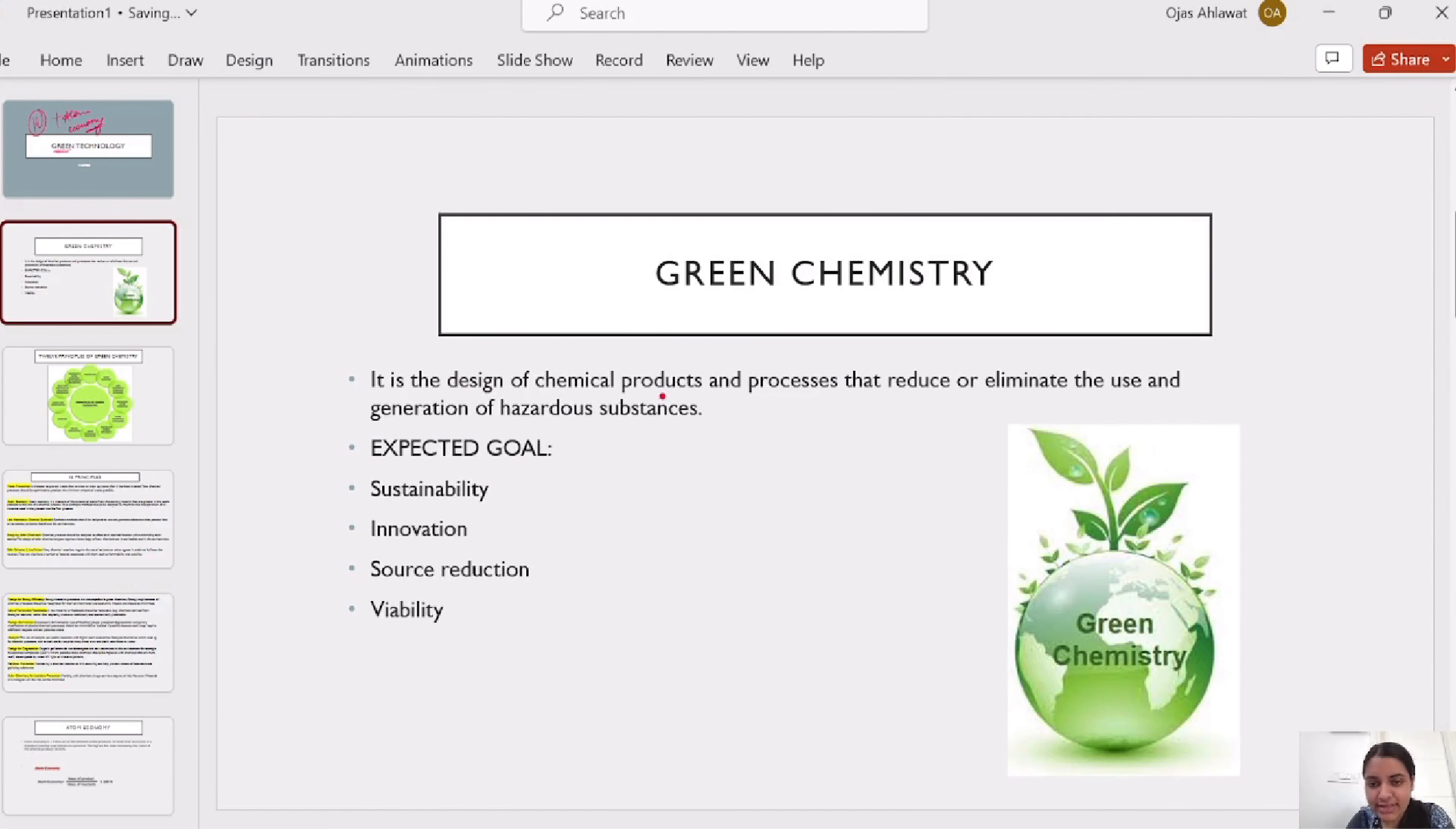Green chemistry is the design of chemical products and processes which reduce or eliminate hazardous substances. What are the expected goals? Sustainability attain, innovation, source reduction and viability. To achieve sustainable development, you need to reduce or eliminate hazardous substances and move towards green chemistry.